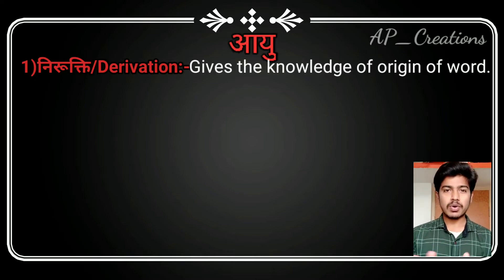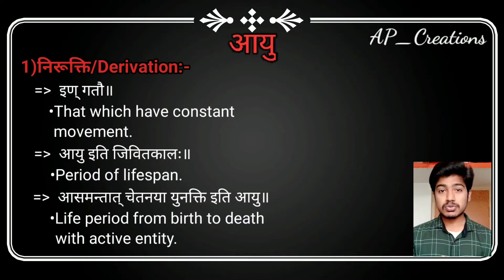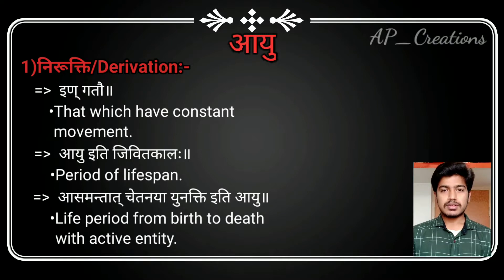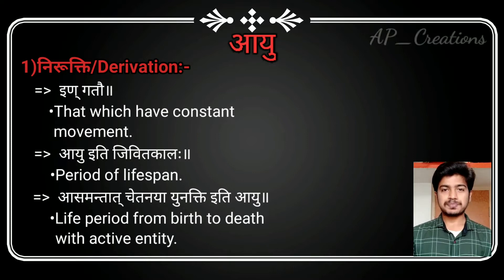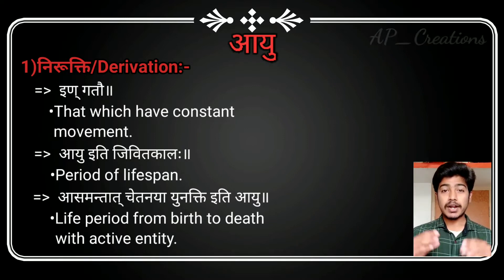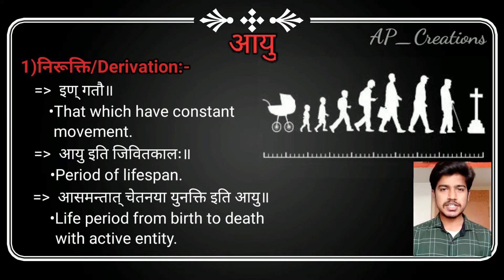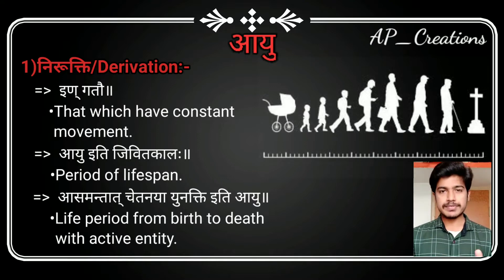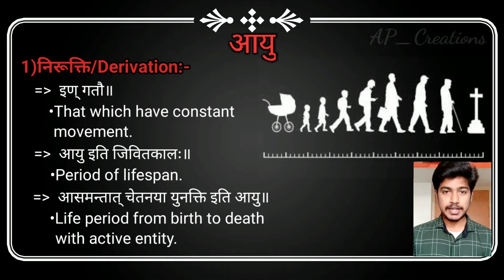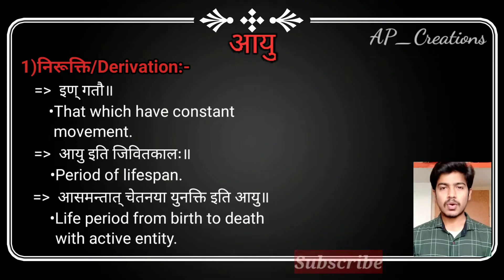Ayu comes from the Sanskrit root word 'in gatav', where 'in' means constant and 'gatav' means movement — that which has constant movement is called ayu. The derivation 'ayu iti jivita kalah' means the period of life span of an individual is known as ayu. The next quotation, 'asamantat chetanaya yunakti iti ayu', means the period of life span from birth to death with the living soul is known as ayu.